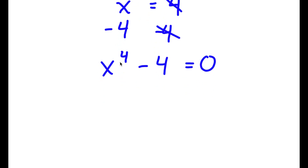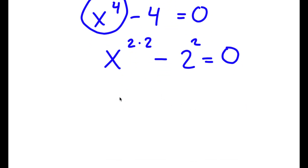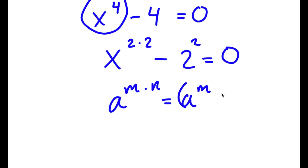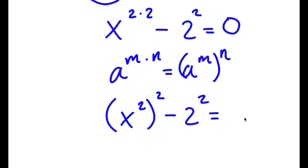Now I'm going to rewrite x to the power of 4 here as x to the power of 2 times 2. Now I have this minus 4, which is the same thing as 2 squared, is equal to 0. Using the rule that a to the power of m times n equals a to the power of m to the power of n, x to the power of 2 times 2 can be rewritten as x to the power of 2 to the power of 2. Now this minus 2 squared is equal to 0.